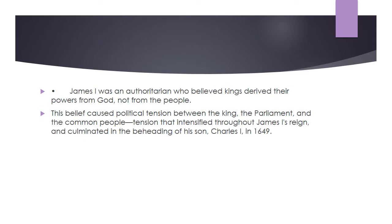James I was an authoritarian who believed kings derived their powers from God, not from the people. This belief caused political tension between the king, the parliament, and the common people — tension that intensified throughout James I's reign and culminated in the beheading of his son, Charles I, in 1649.